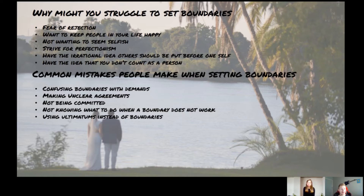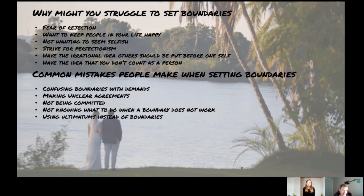Another mistake is not knowing what to do when a boundary does not work — this is where consequences and repercussions come in when a personal boundary isn't adhered to. Also, using ultimatums instead of boundaries. An ultimatum would be telling someone 'if you don't do this, this is going to happen.' Setting a boundary instead would be saying 'I'm not quite comfortable with this; I would prefer if you handle it this way.' We'll go more into detail on this when we talk about negotiable and non-negotiable boundaries.